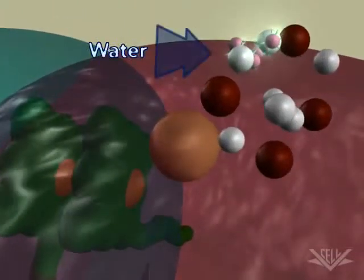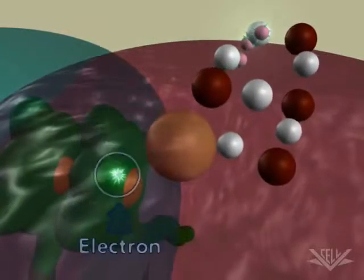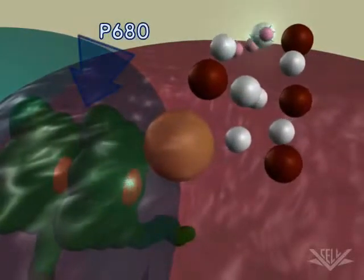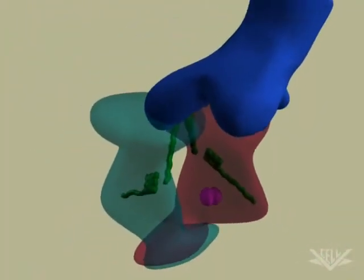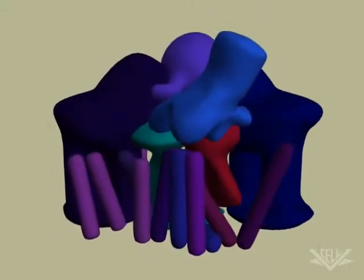Electrons from water are then transferred to the P680 molecules that have lost their electrons in the process. Additional proteins are involved in splitting the electrons from water, and still other proteins are necessary to build the complete Photosystem Reaction Center.